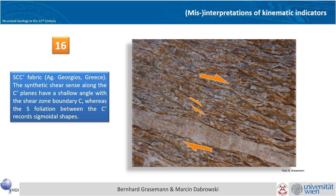Very nice SCC' fabric, where you can see the C which is parallel to the foliation in these orthogneisses here from Agios Georgios in Greece. You can recognize very nicely the C' which I'm outlining here, and in between you can see the sigmoidal S here, so this gives you a nice top-to-the-right shear sense.